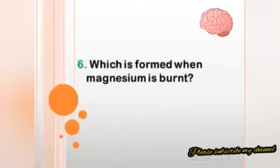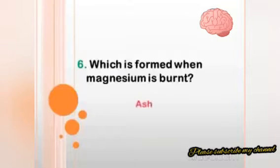Which compound is formed when magnesium is burnt? Answer: magnesium oxide (white ash).